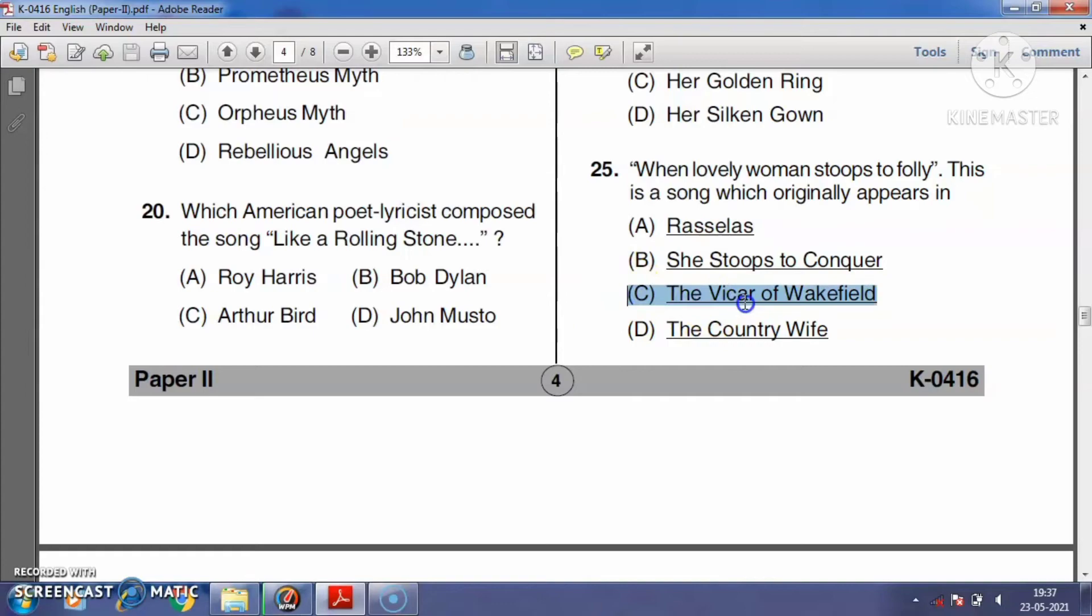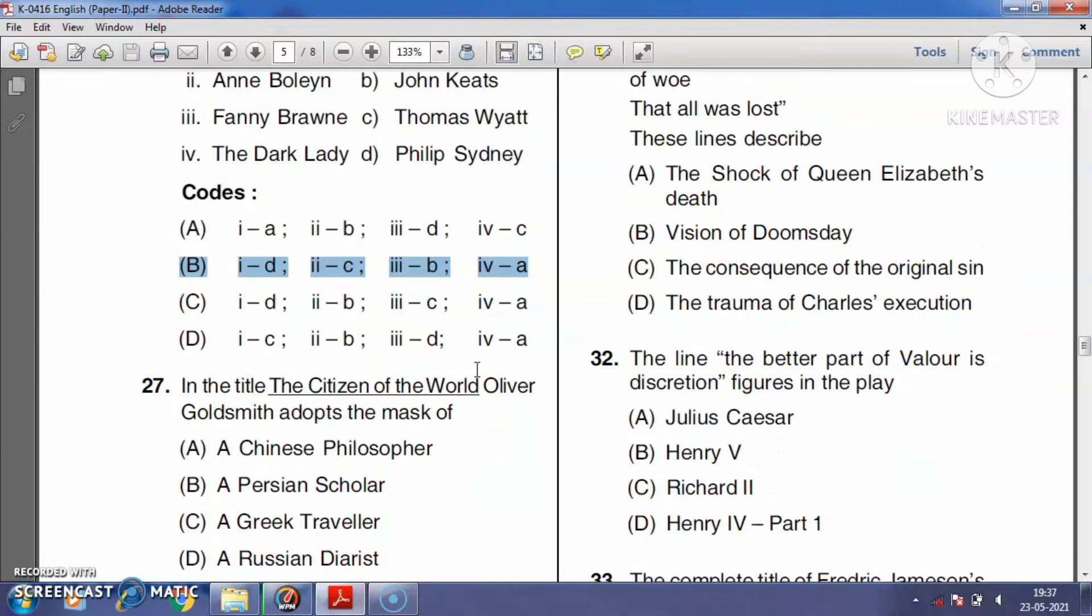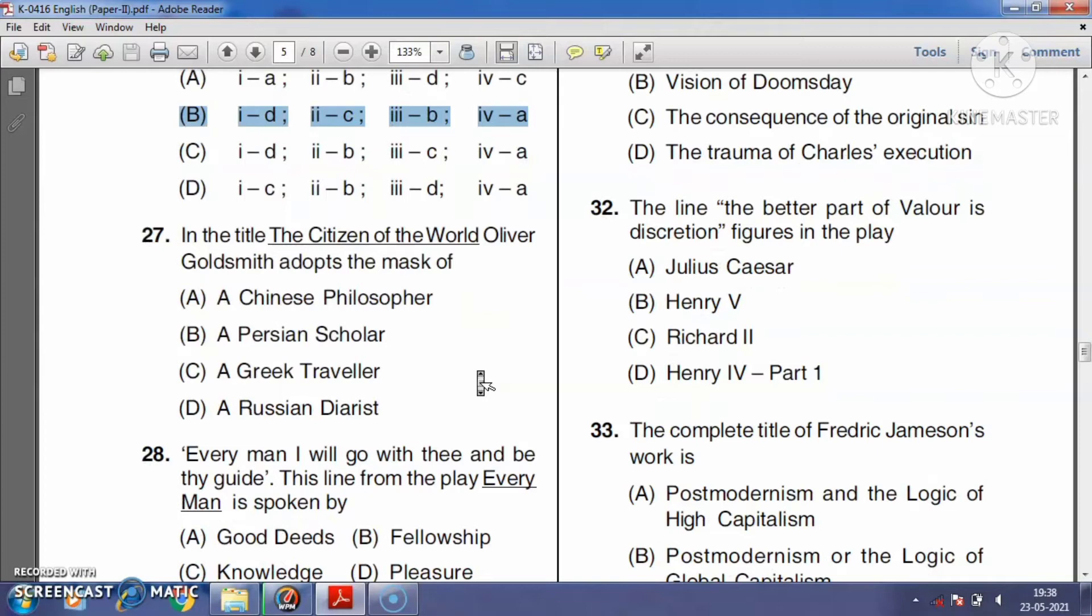Question number twenty-six: Match the following. Stella is Sidney's lover, Anne Boleyn is related to Thomas Wyatt, Fanny Brawne is the beloved of John Keats, and Shakespeare's sonnets are dedicated to the Dark Lady. So the right answer is option B.